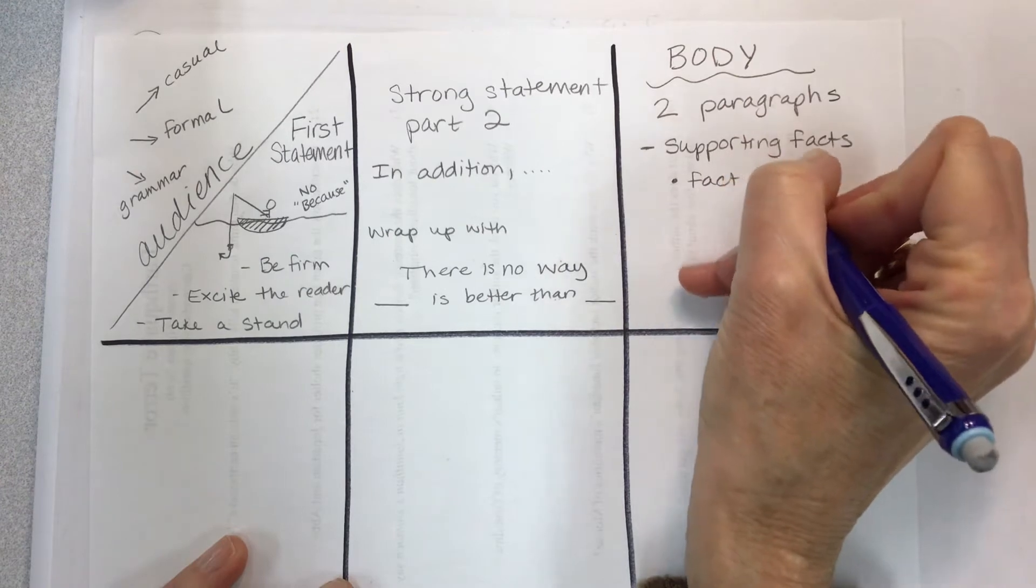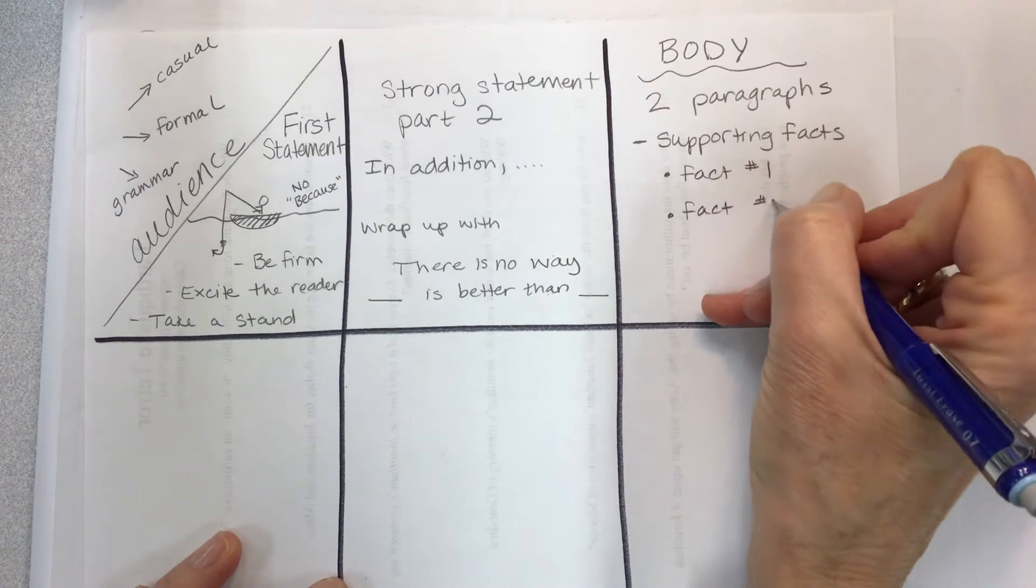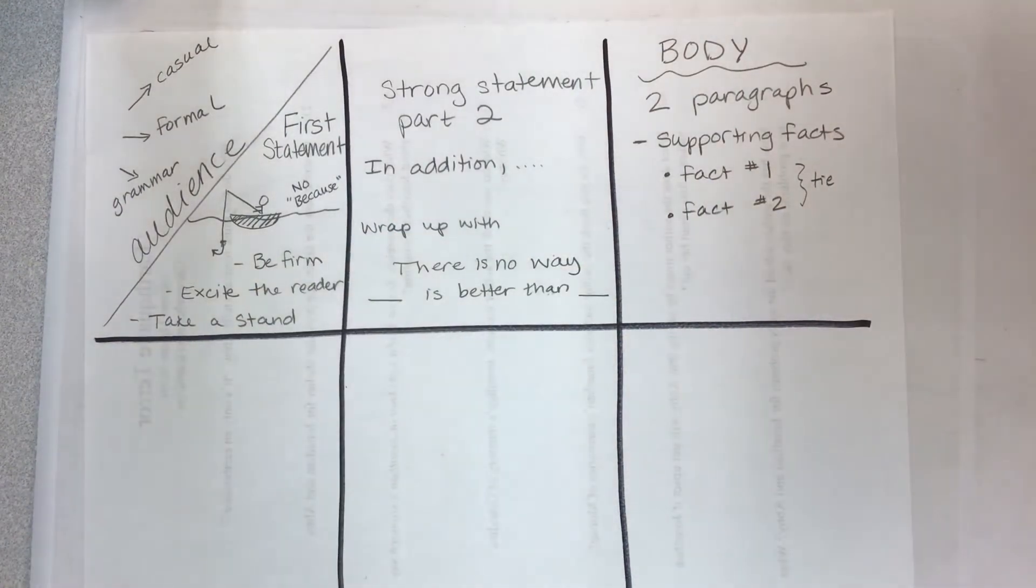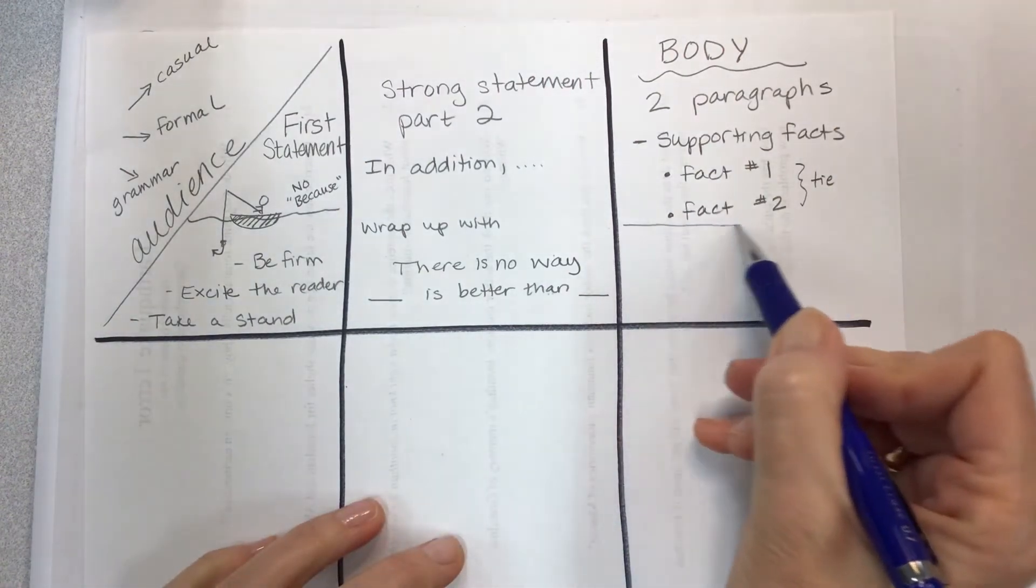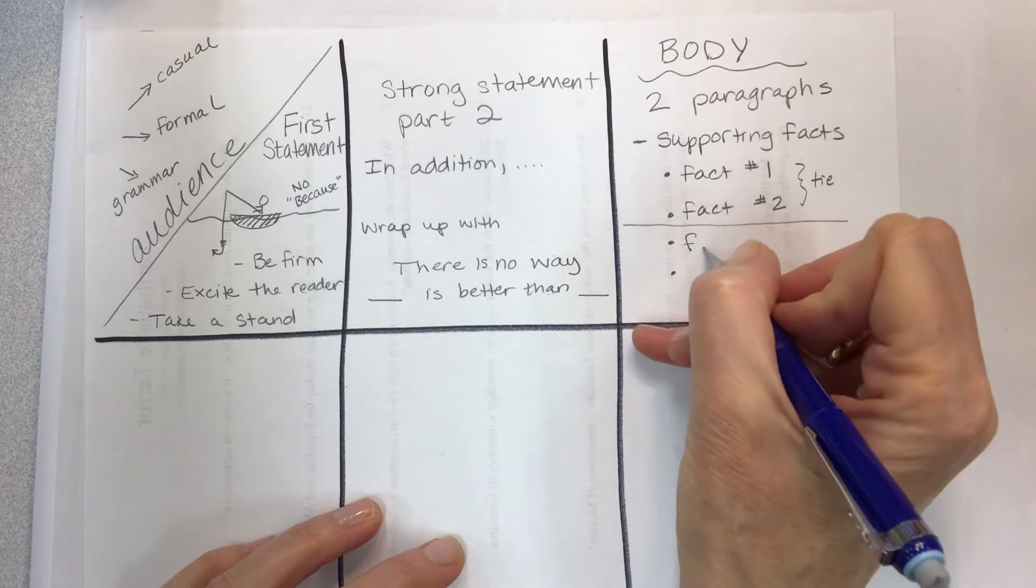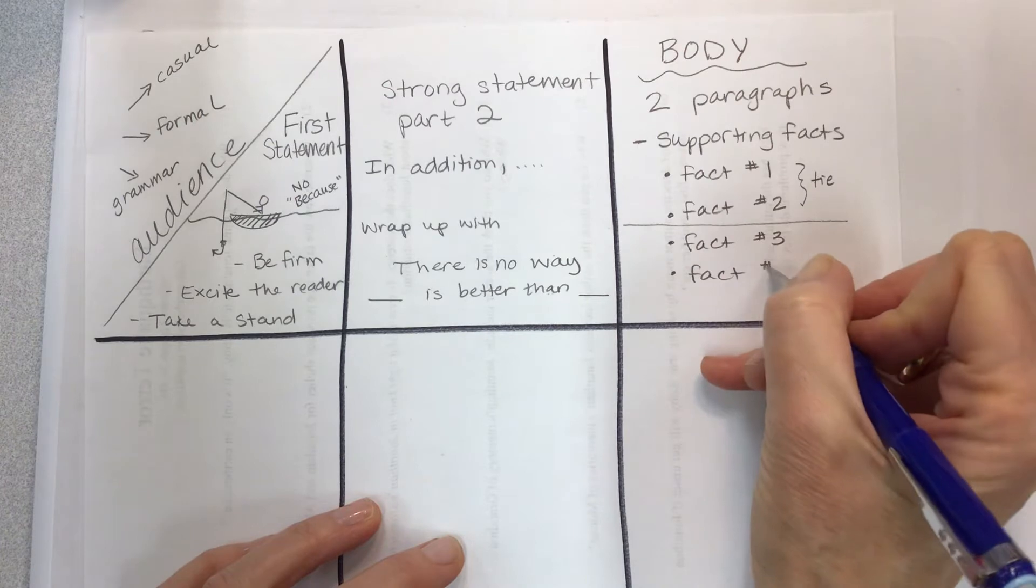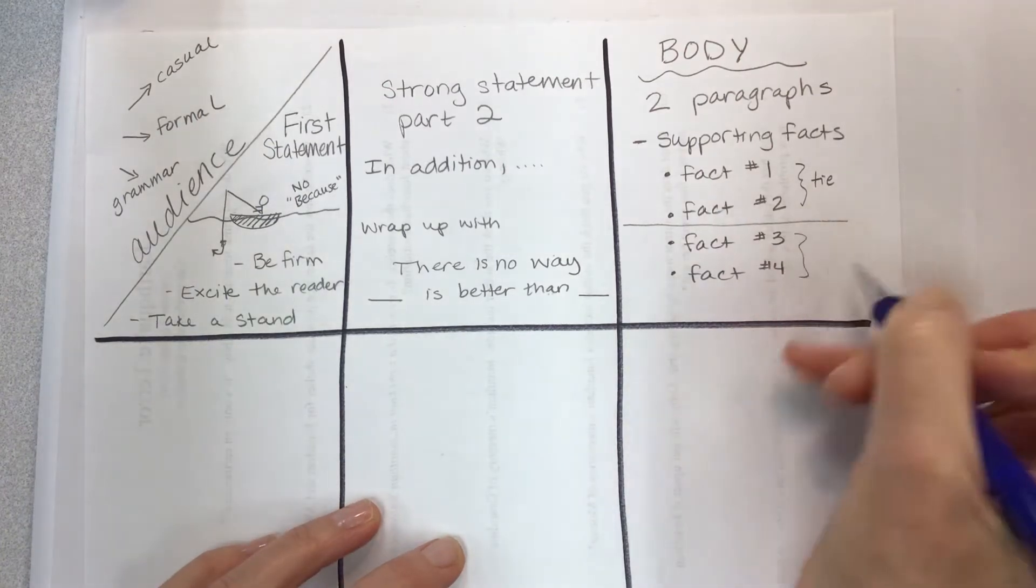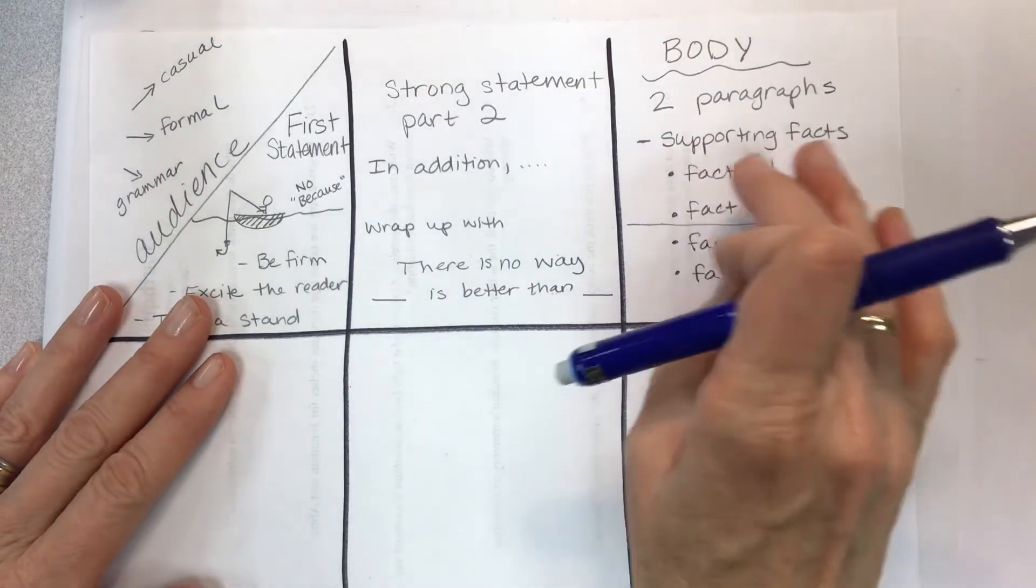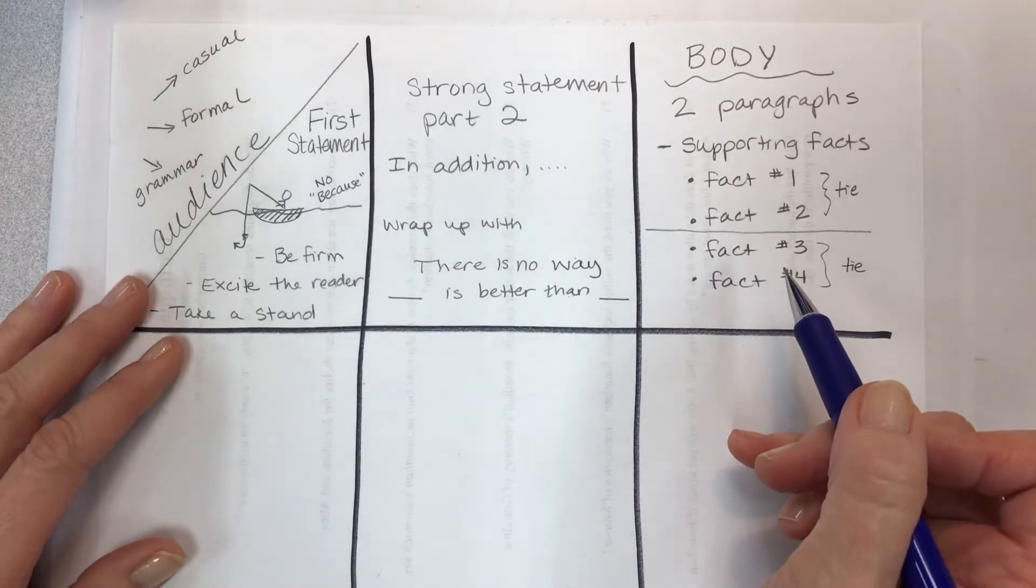You should be passionate when you write. So it's going to be your fact one, fact two. If there's any way you can tie those together, make a connection. You may have more facts for another paragraph. You want to be able to tie these things together to help your writing flow. So these supporting facts are going to come from you, your passion, what you strongly believe.